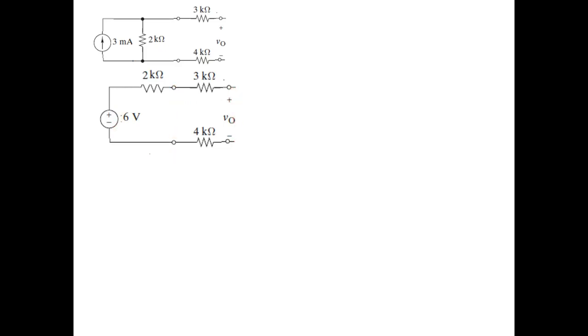Whatever is the voltage here will be the same voltage here and the same voltage here. That means VO will be 6 volts. Our RTH will be found by shorting this, and we get the sum of all three resistances. So VTH is 6 volts, and RTH is the sum of all three resistances. This is our Thevenin circuit.